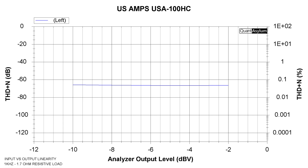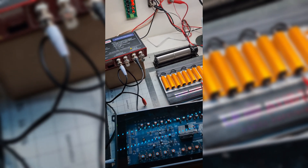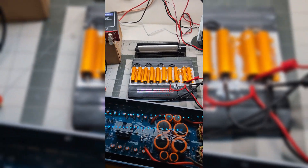Finally, I ran an input versus output linearity test. This makes sure that as the input level increases, the output matches it and does not deviate. We can see basically a flat line, which means that regardless of the volume level you're at, the amplifier does an excellent job matching the gain without any attenuation or boosting.